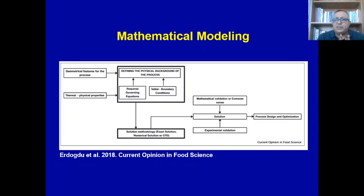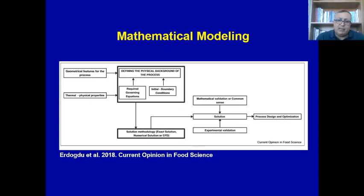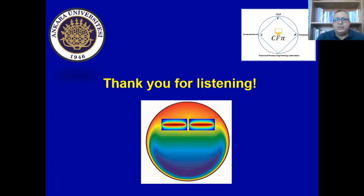This is roughly a sketch of what we need for a mathematical modeling case. First, we define the physical background of the process with governing equations and initial and boundary conditions. Then, geometrical features and process parameters are the inputs. We obtain the solution using numerical or analytical approaches, validate it experimentally, and then use this validated model for process design and optimization purposes.